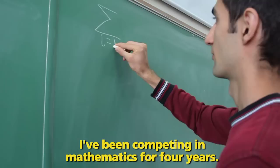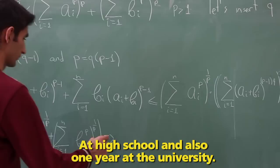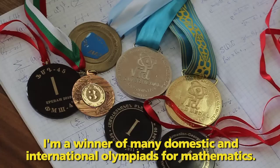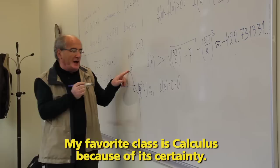I am Artem Gossian. I studied at the American University of Armenia, business major. I have been competing in mathematics for four years at high school and also one year at the university. I am a winner of many domestic and international Olympics for mathematics.